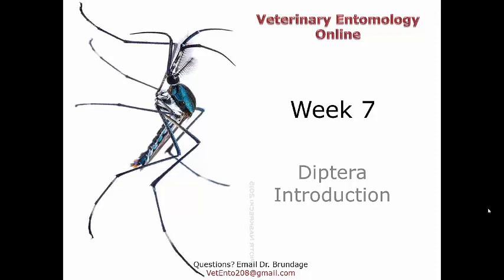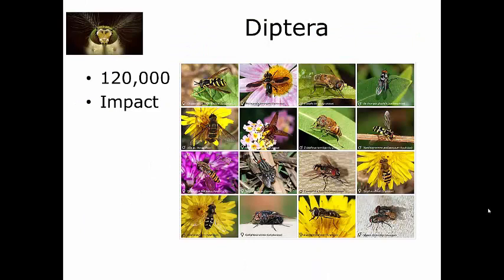Now we're going to get into the Diptera, which is one of the more important orders when it comes to veterinary entomology. The Diptera are commonly known as the true flies. 'Di' means two, 'ptera' means wings — they have two true wings. We call them true flies to differentiate them from butterflies, dragonflies, or other things with 'fly' in the name.